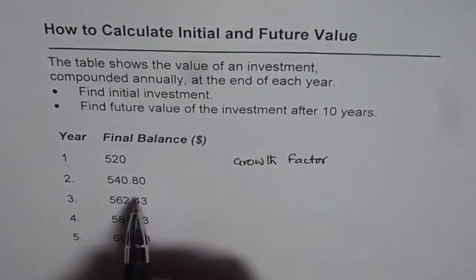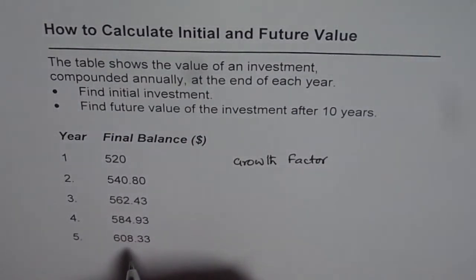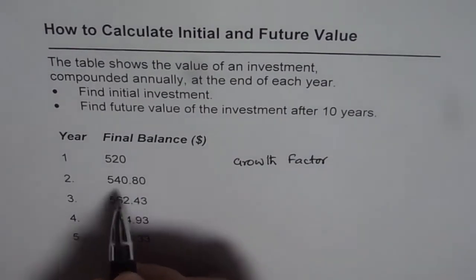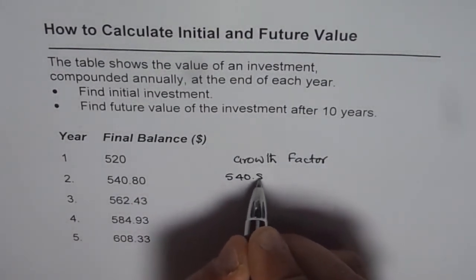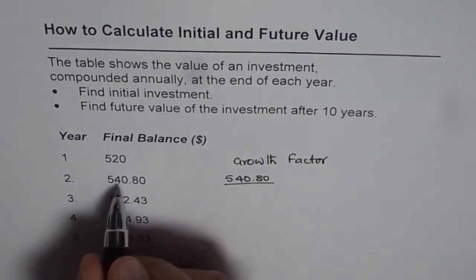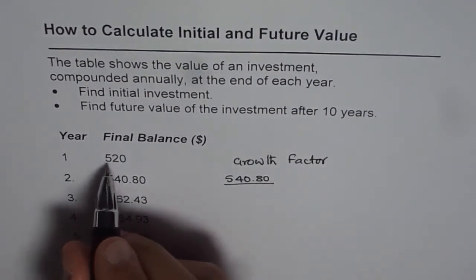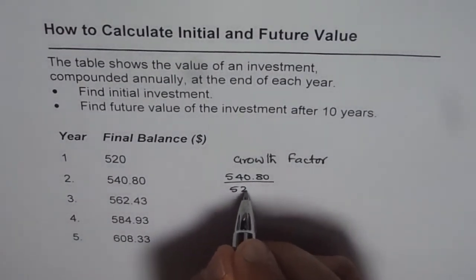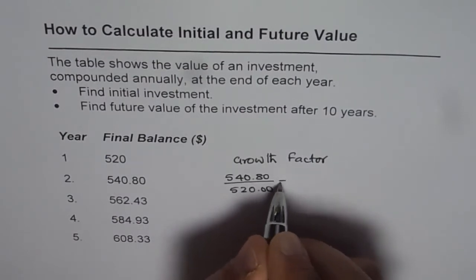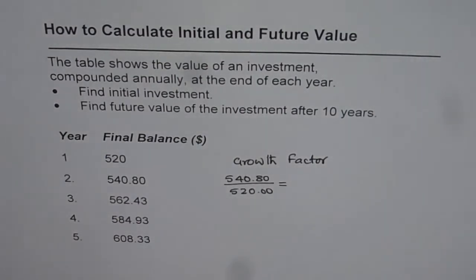Now we could divide any two consecutive values and find the growth factor. So let's divide 540.80, the value at the end of second year, by the value at the end of first year which is 520.00. It gives us, let's use calculator, 540.80 divided by 520, it gives you 1.04.